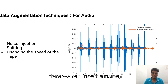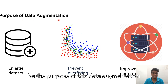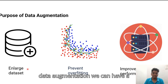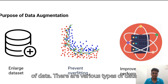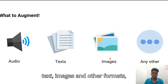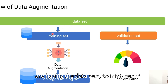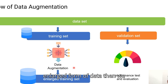Examples of data augmentation techniques for audio data include inserting noise, shifting the data, and changing the speed of the audio. The purpose of data augmentation is that after augmentation we have an enlarged dataset that helps improve the performance of the model and also prevents overfitting. The various types of data that can be used for augmentation include audio, text, images, and other formats. The workflow is: start with the training dataset, after augmentation have an enlarged form of data, then validate the dataset, and then perform testing and evaluation.